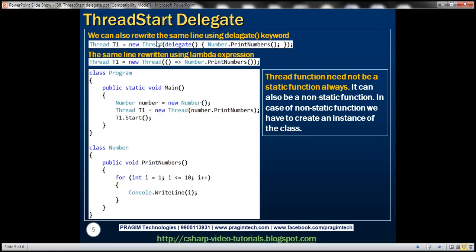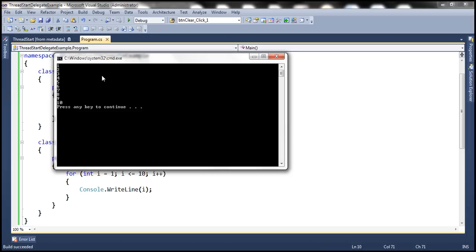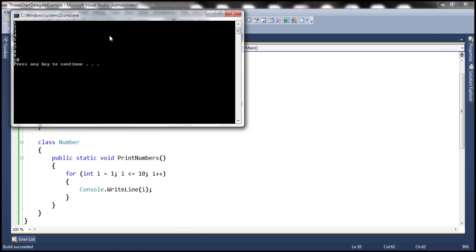And there are several other ways of passing the address of the function to the Thread class, like by using the delegate keyword or by using lambda expression as you can see here. Now let's say you have to use the delegate keyword. So all you do is use the delegate keyword and then invoke the function. Let's go ahead and run this and see if we get the same output. Look at that. And we can also use a lambda expression like that, number dot PrintNumbers, the same output.